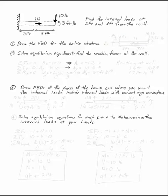Find the internal loads at 2 feet and 4 feet away from the wall. The first thing we want to do is draw the free body diagram for the entire structure.